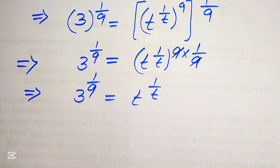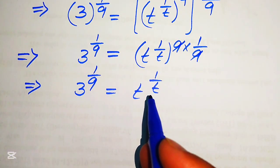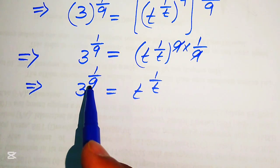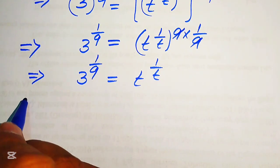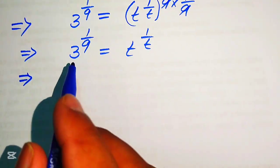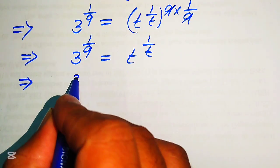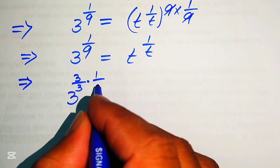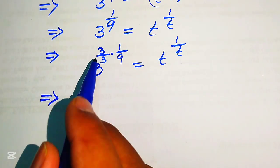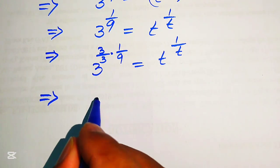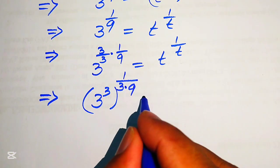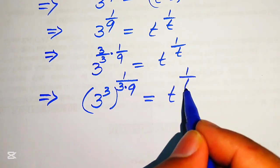Focus on the right-hand side: the exponent is the reciprocal of its base. We need to create this same condition on the left-hand side. For this, we multiply and divide the left-hand side terms by 3, writing it as 3^(3/3) times 1-over-9, which equals t^(1/t). We then move the 3 inside, multiplying 3 with 9 to get: 3^3 whole power 1-over-(3×9) = t^(1/t).